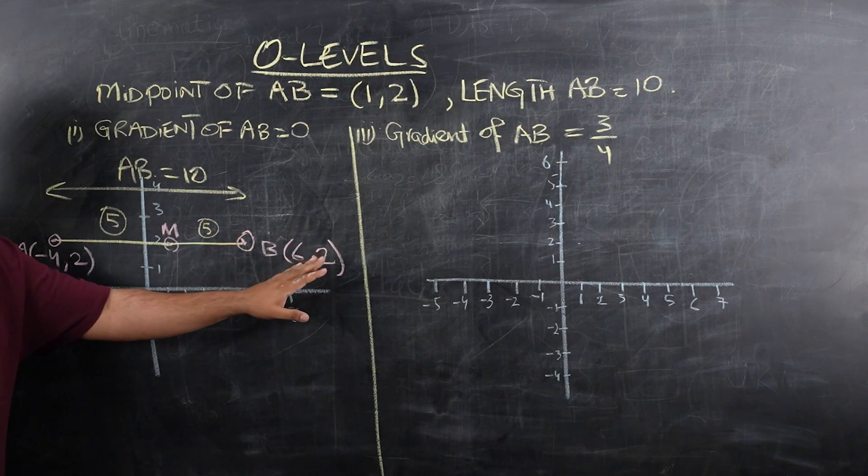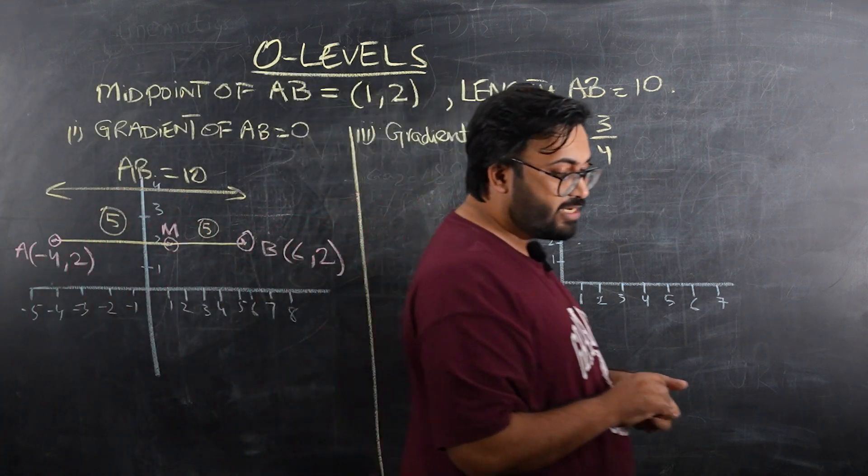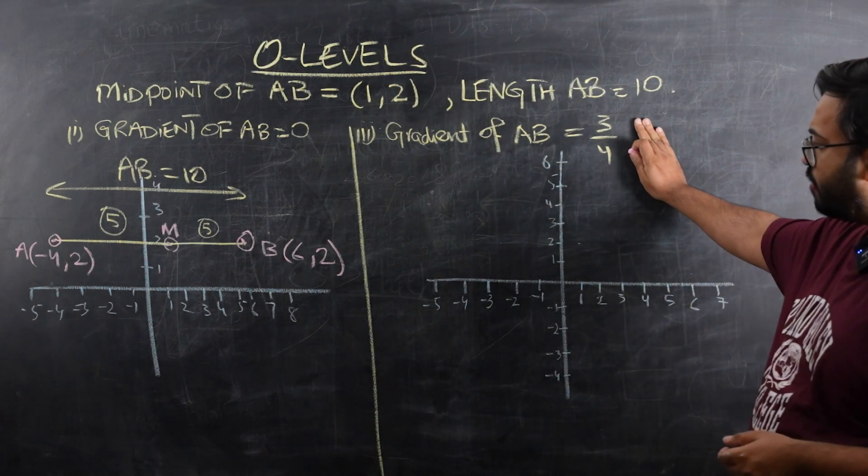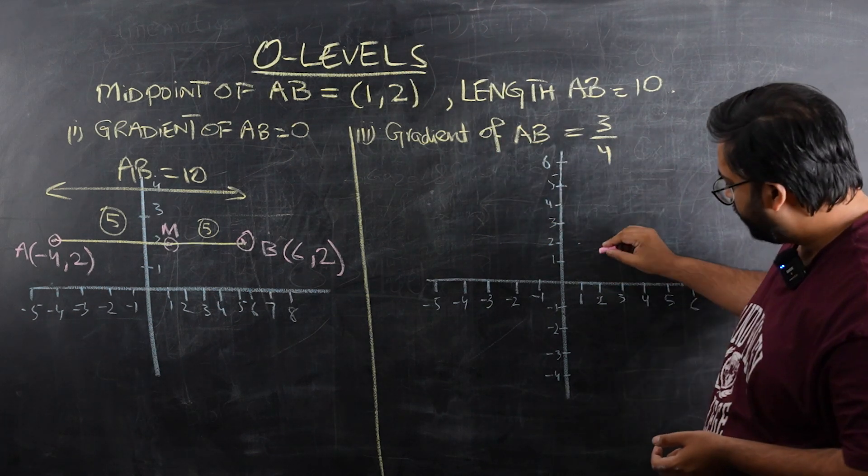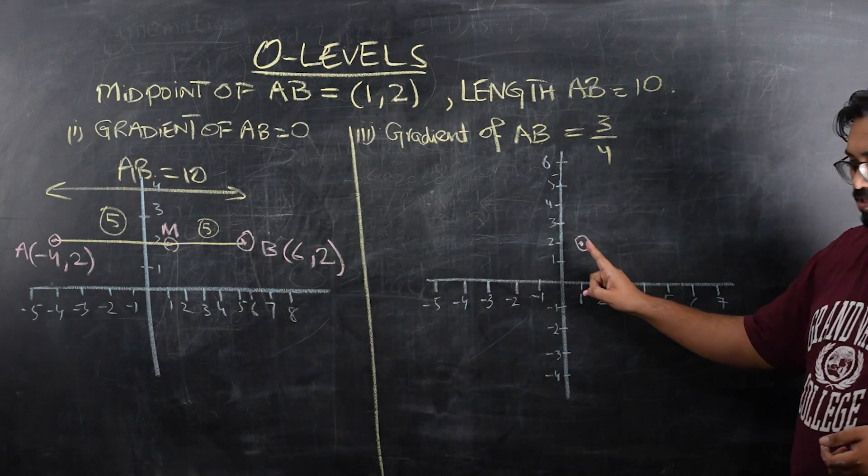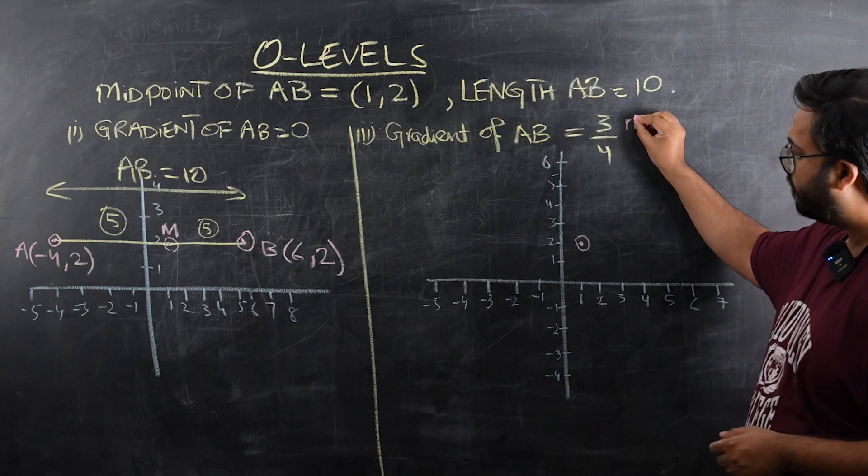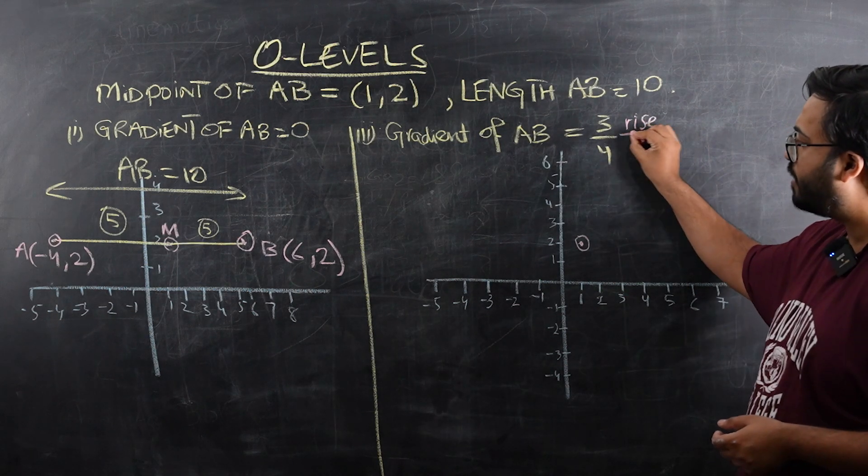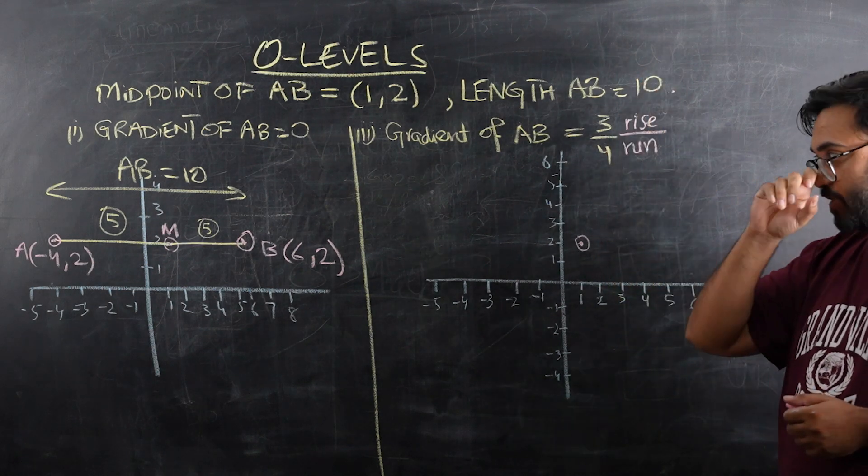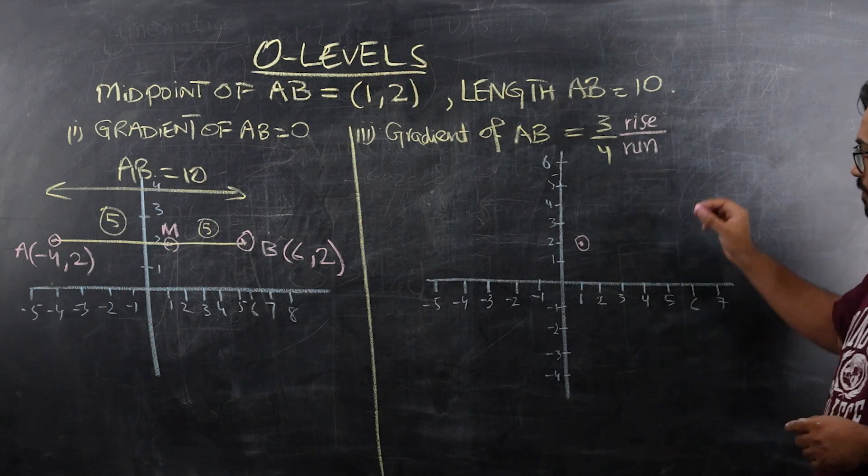The second portion is a little bit tricky. They have now given the gradient is 3/4. The midpoint is again still at (1,2). The gradient is 3/4. We have seen a formula for gradient when we were kids, that was the rise over run. Rise means how much you have to go vertically, and run means how much you have to go horizontally. The gradient is positive, so I'm going this way.